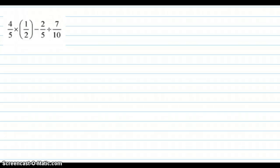So first off, our equation here: 4 over 5 times 1 half minus 2 fifths divided by 7 tenths.